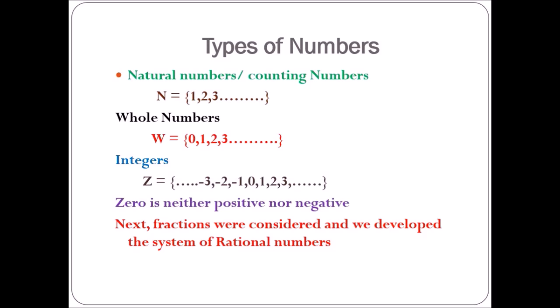When zero is included along with the natural numbers, we have the set of whole numbers, denoted by capital W. Then comes the set of integers, which includes positive and negative integers along with zero. Zero is neither positive nor negative.